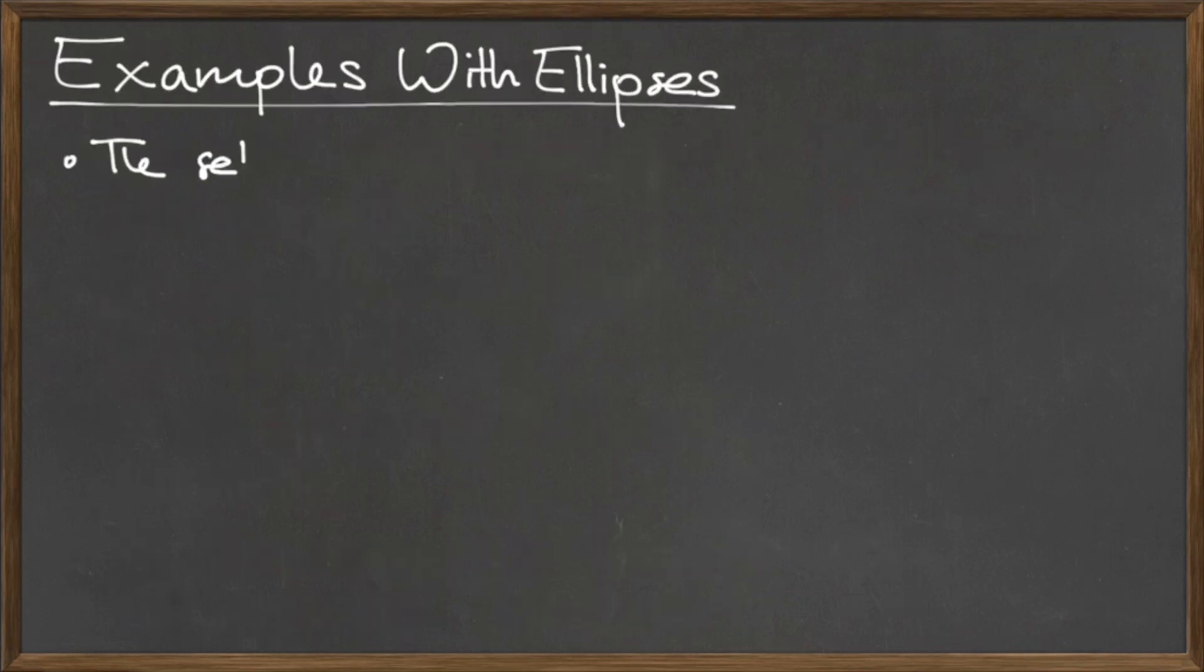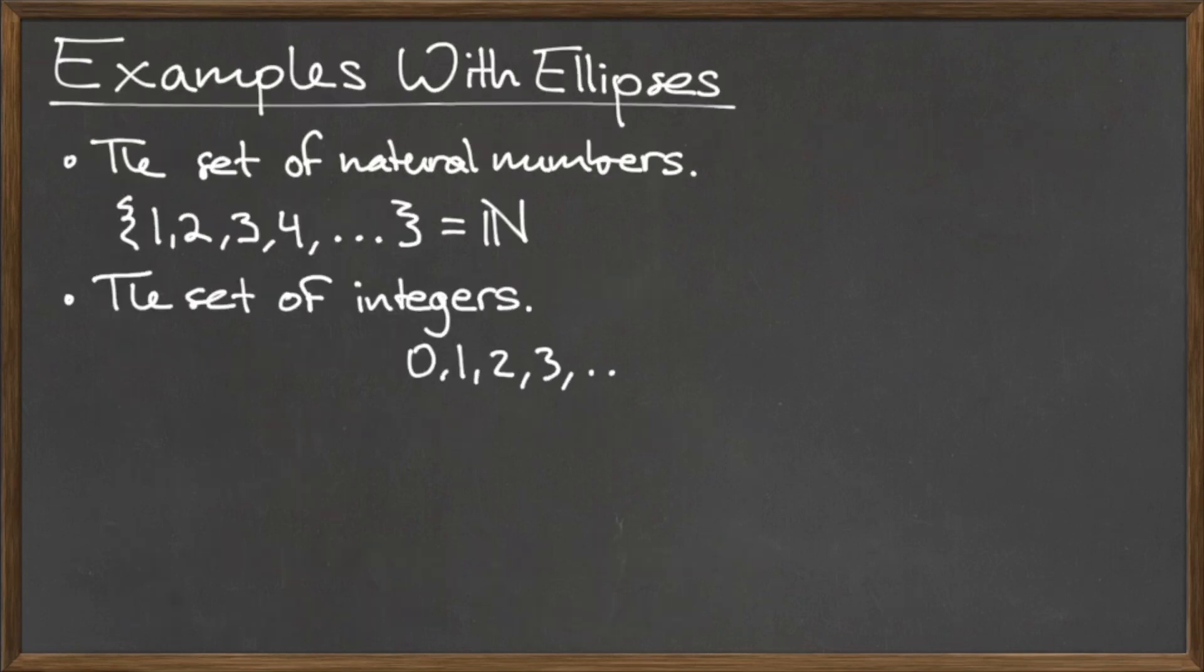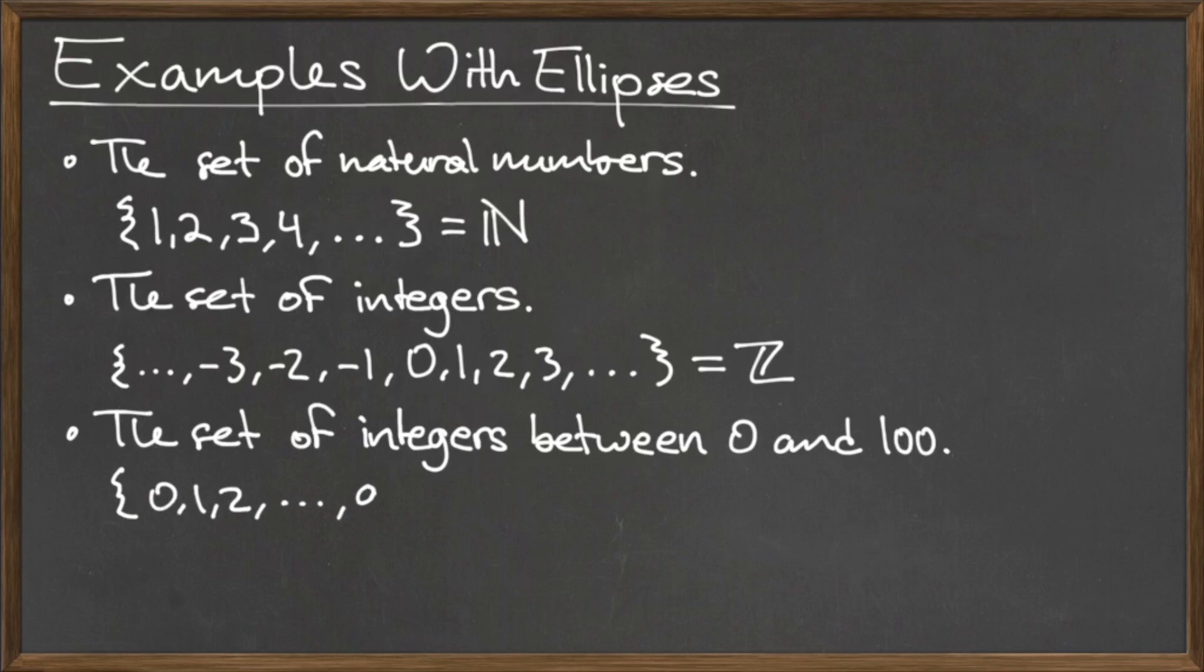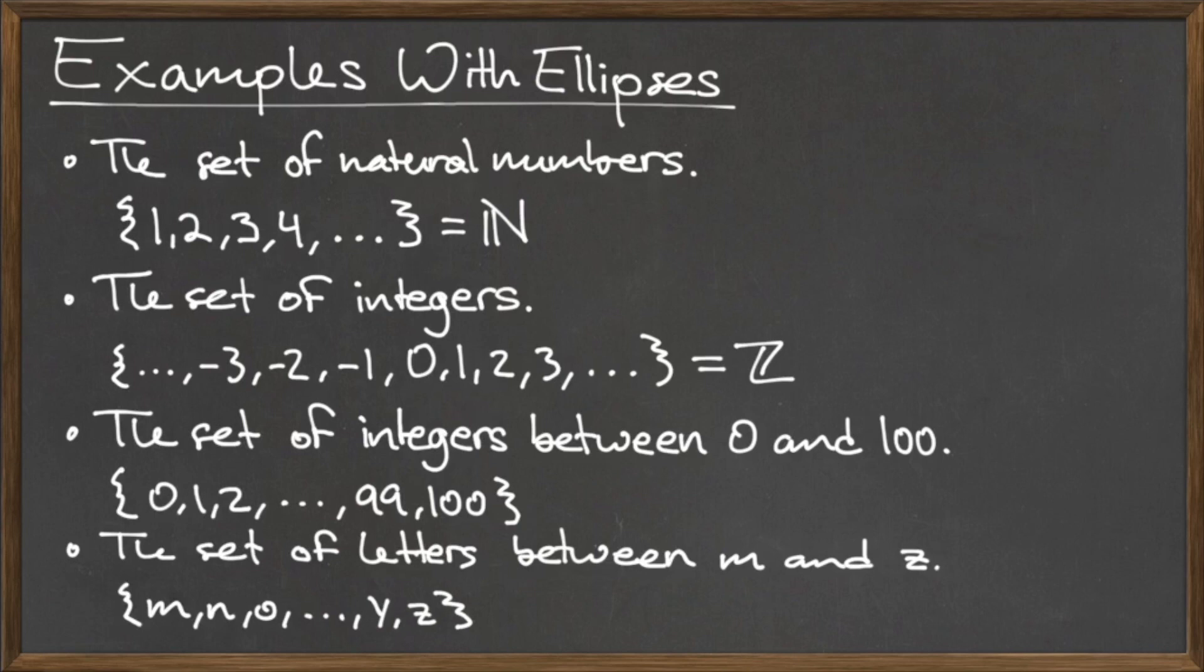Here are some examples of sets written in roster form using ellipses. The first two sets on this list are very important and should be committed to memory, as we will use them very frequently from this point on.